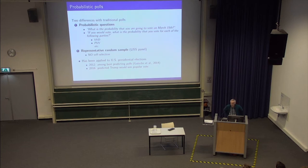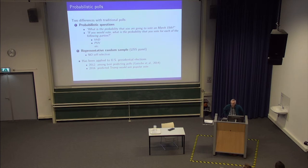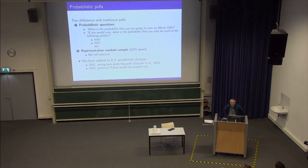The other important difference is that we don't use a so-called convenience sample but a true probability sample — what Statistics Netherlands calls it. Our sample is based on a random selection of all addresses in the Netherlands provided by Statistics Netherlands. The LISS panel, managed by CentERdata, selects a large number of Dutch households randomly from the Dutch population. There's no self-selection into the panel, which makes it a more representative panel than many others used for this kind of research.